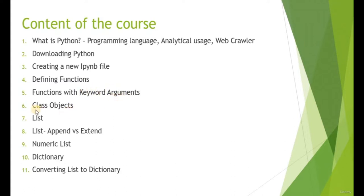We're going to talk about class objects. A class is a classification of different objects. For example, I'm an instructor and you are a student. We can create two different kinds of class to classify me as the instructor and the rest of the audience as my students. We're also going to talk about the list data structure in Python.